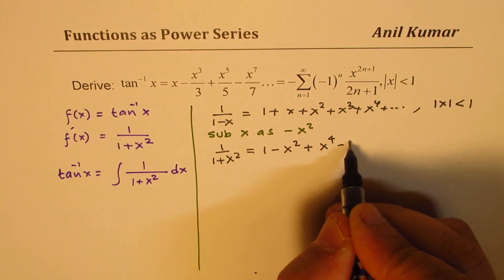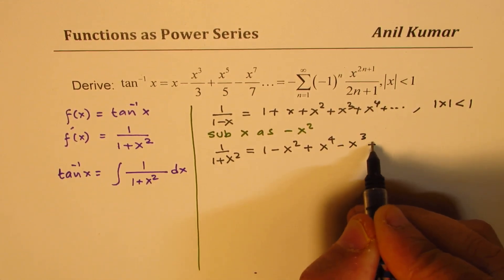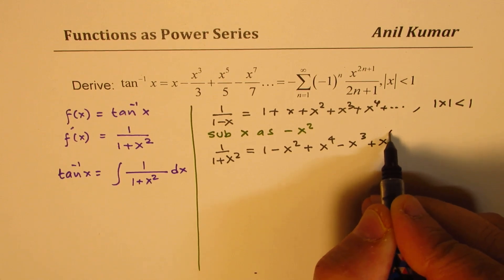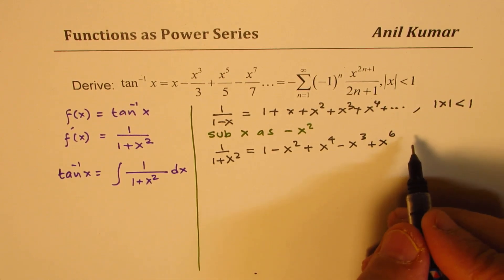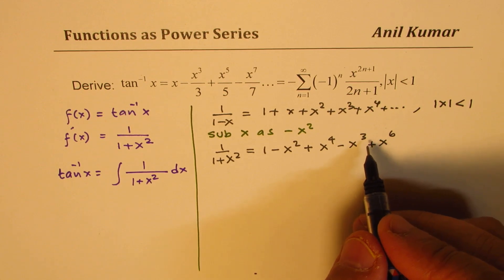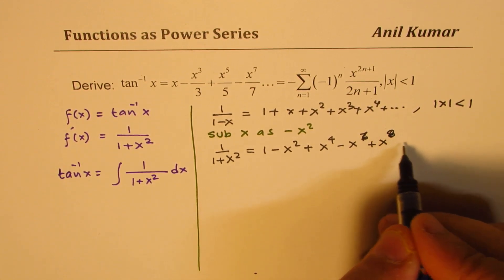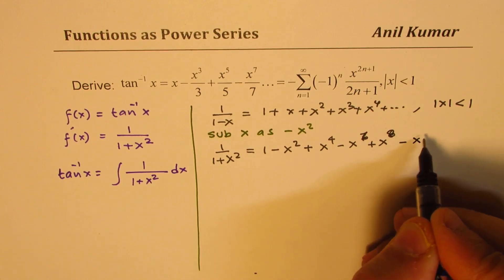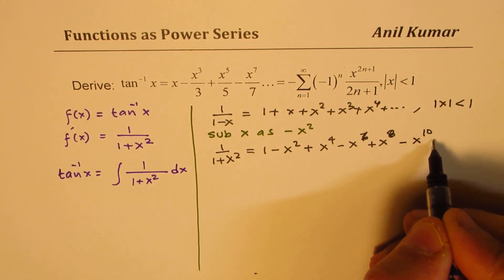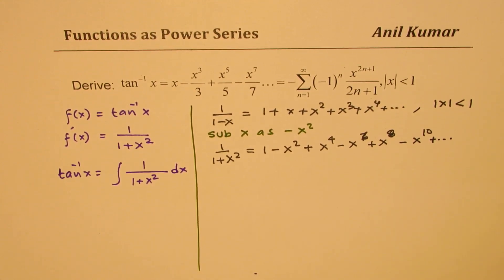So that is how we are going to get odd powers will be with negative coefficients, even powers will be with positive coefficients. So I think I missed something. Oh sorry, six and this is eight.